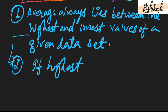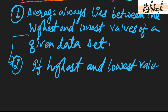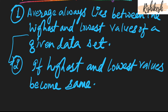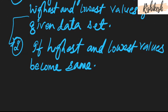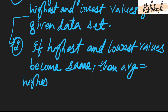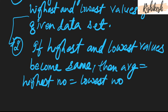But if the highest and lowest value are the same, then the average will be equal to both the highest and the lowest value. This is a sub-condition. When will the highest and lowest values be the same? Only when all the numbers are the same. In that case, the average equals the highest number, which also equals the lowest number.